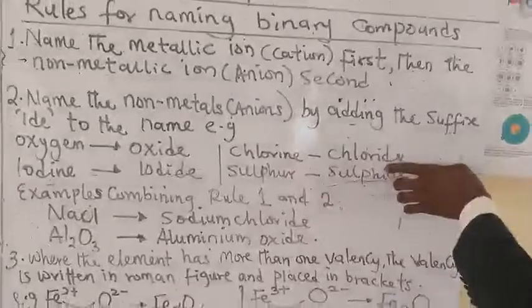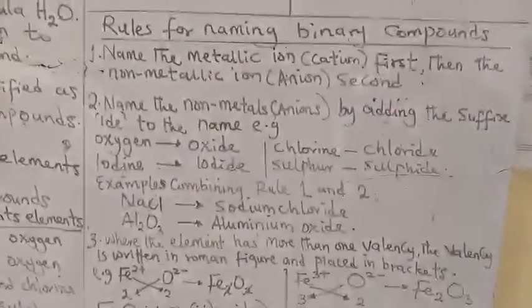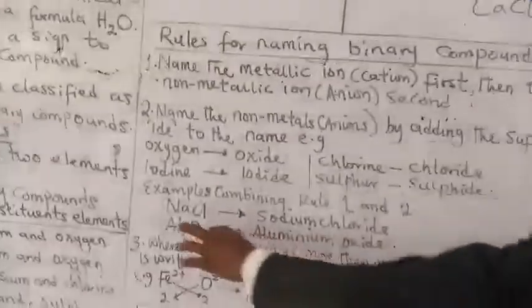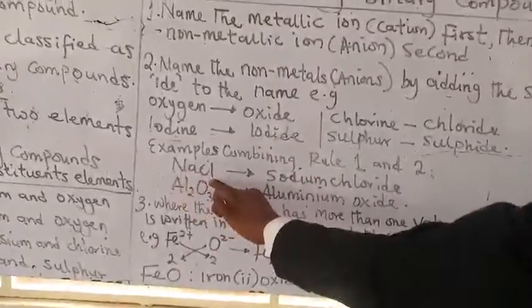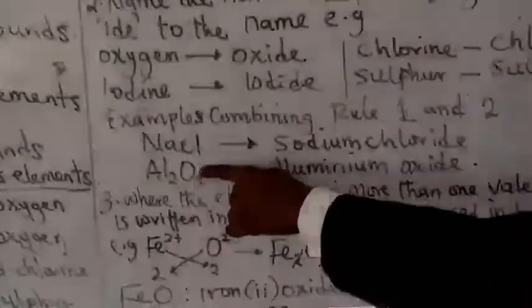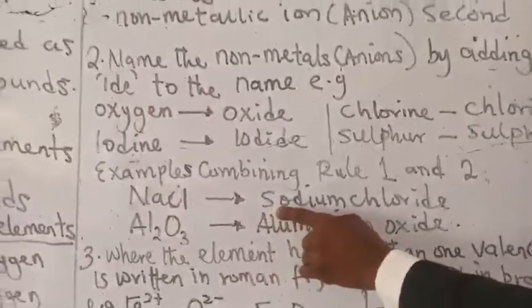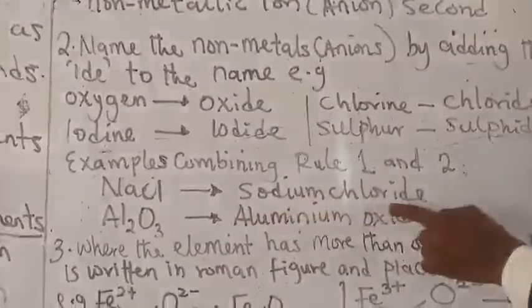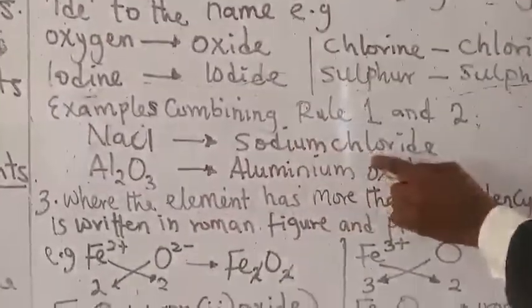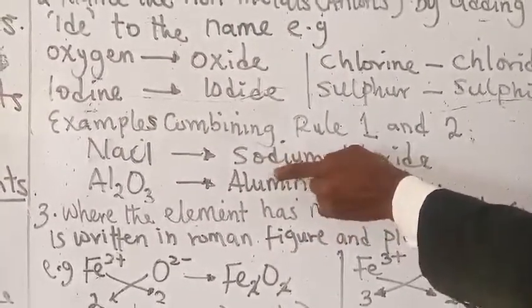Chlorine, likewise, I replace it with I-D-E. That is the basic rule while naming the non-metallic radicals. For example, sodium chloride. This is sodium chloride. You name the sodium. Remember the name. You don't add anything. But the non-metallic ion, you add I-D-E. So this becomes sodium chloride. Not sodium chlorine, but sodium chloride.